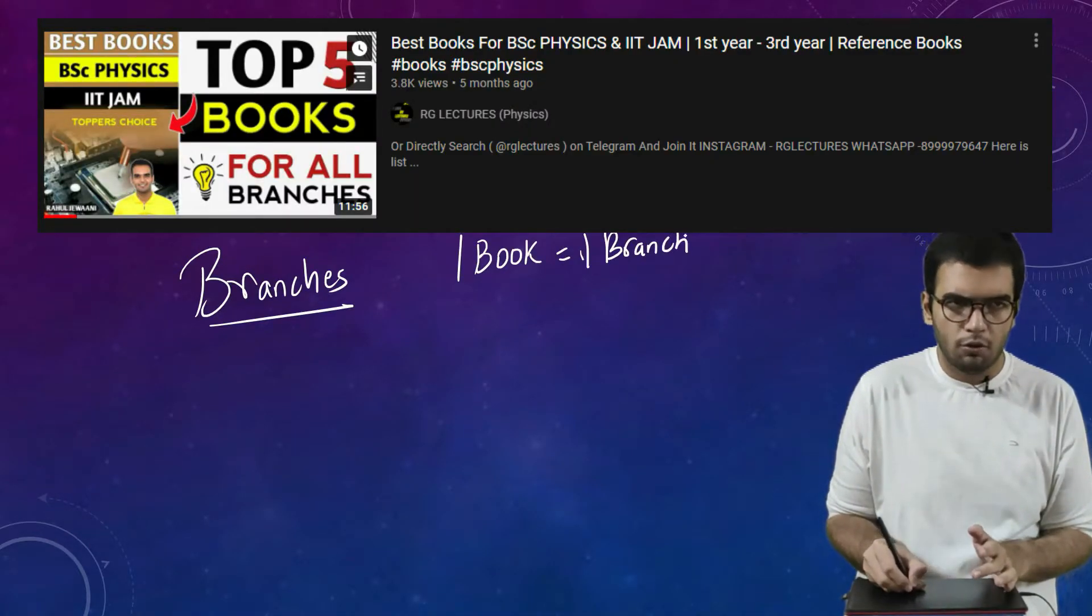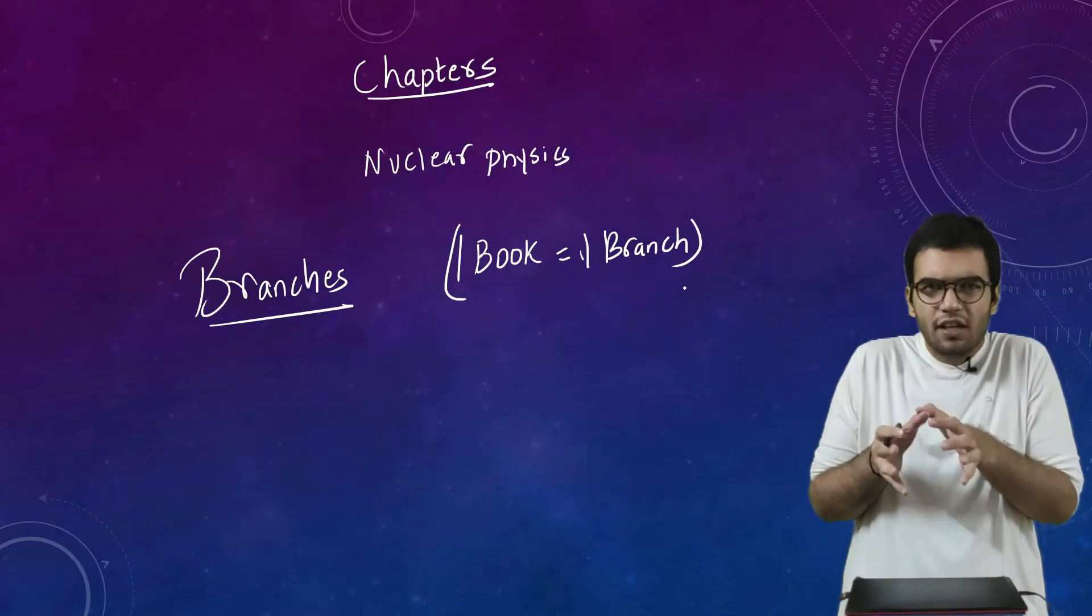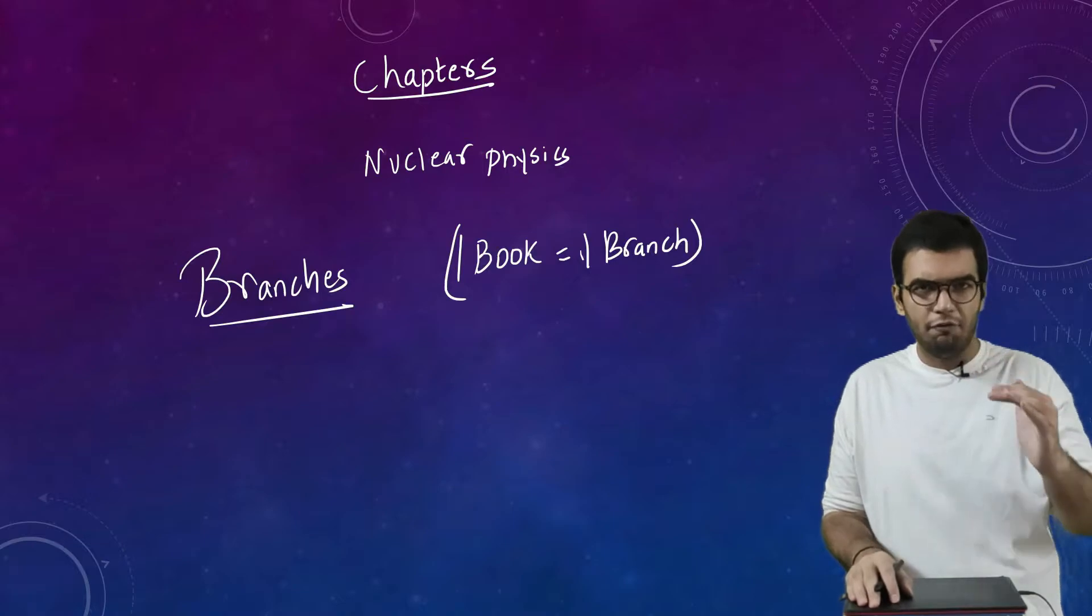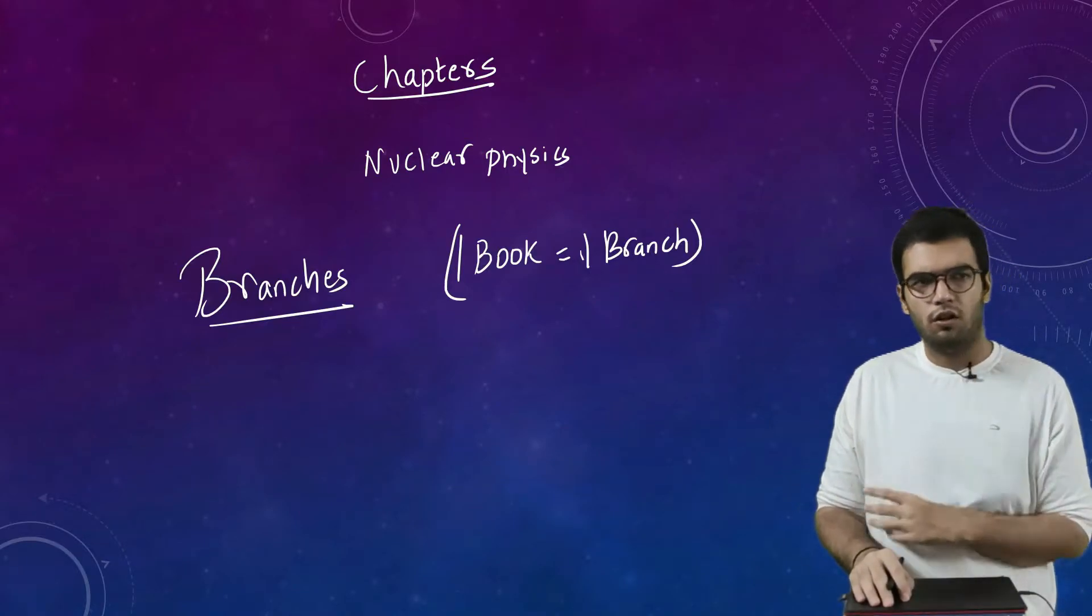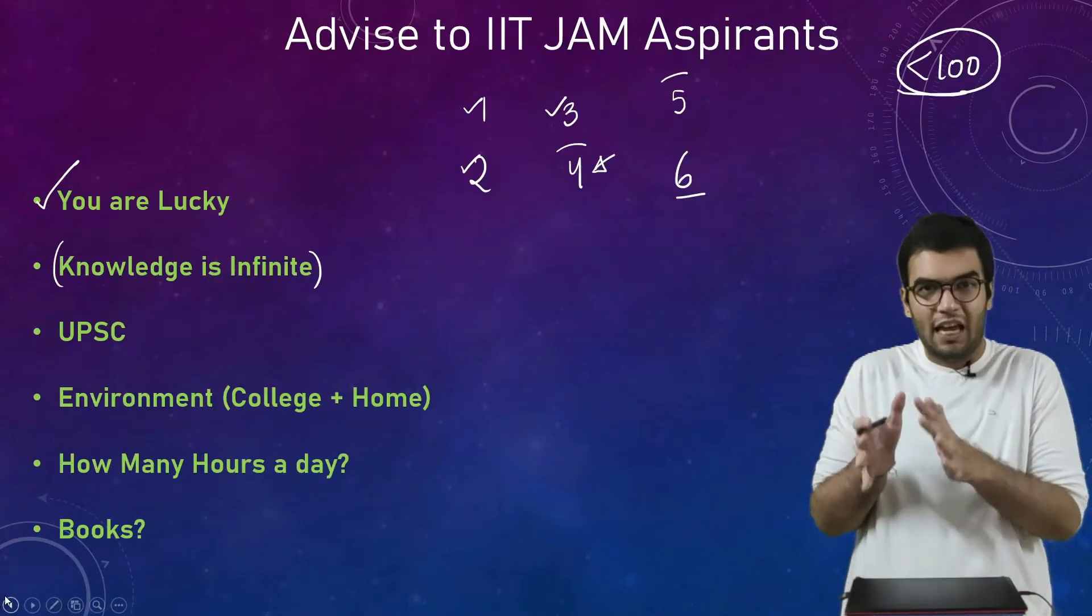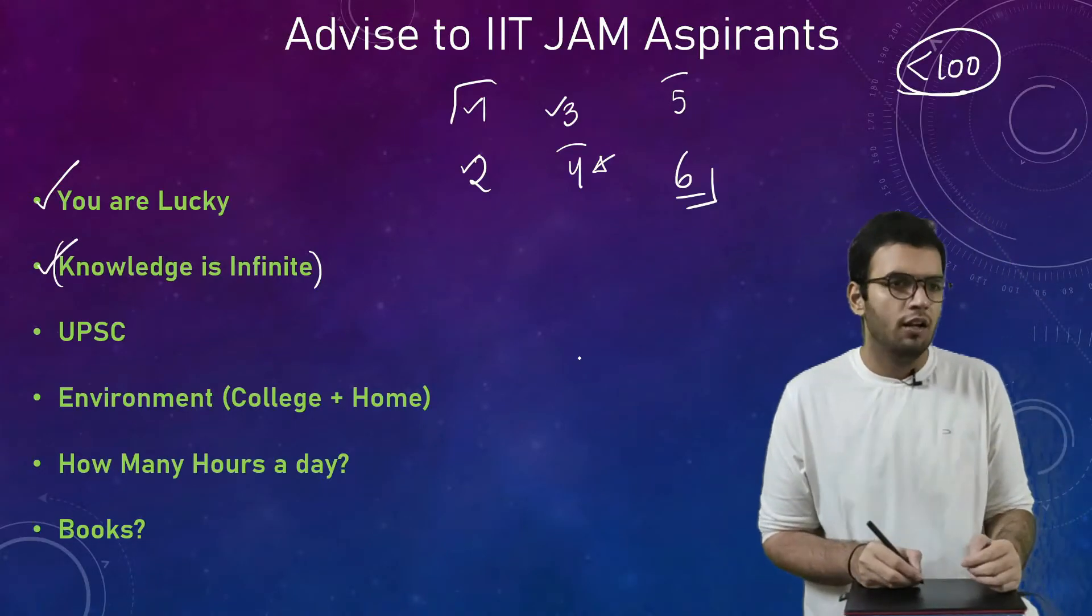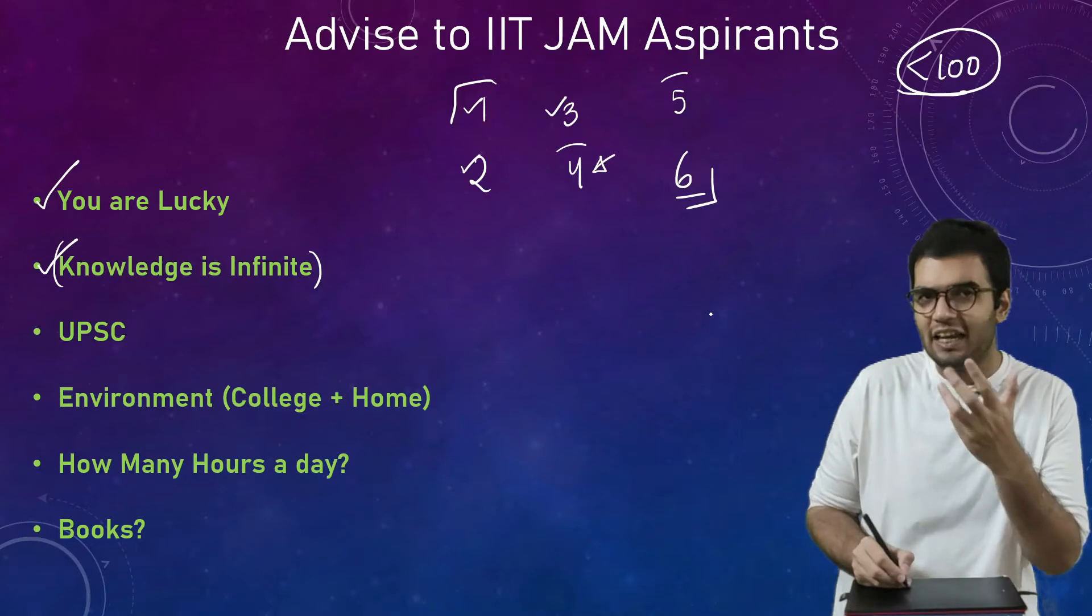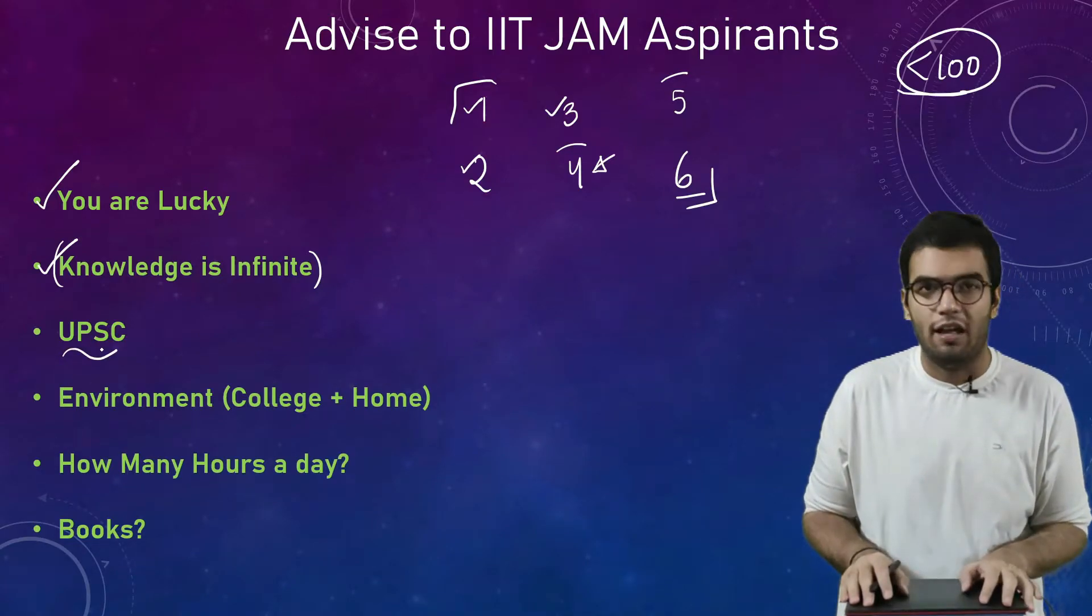So most of the toppers suggest follow one book for one branch. Follow one book for one branch, that is the optimum way. If there are some concepts which are still left, which you have not understood yet, then refer the second book. Otherwise, do not touch the second book. Knowledge is infinite, but time is not infinite. You have got a limited amount of time. So this is the second thing.